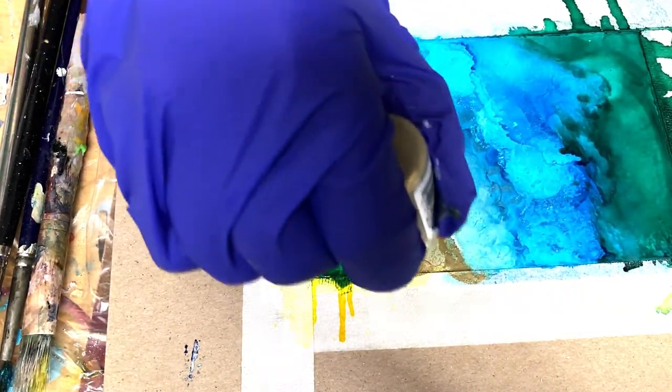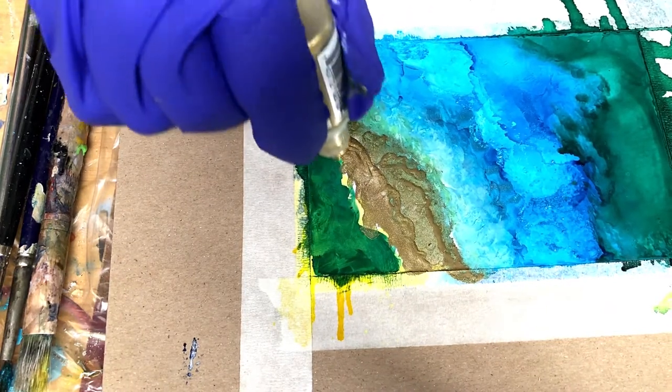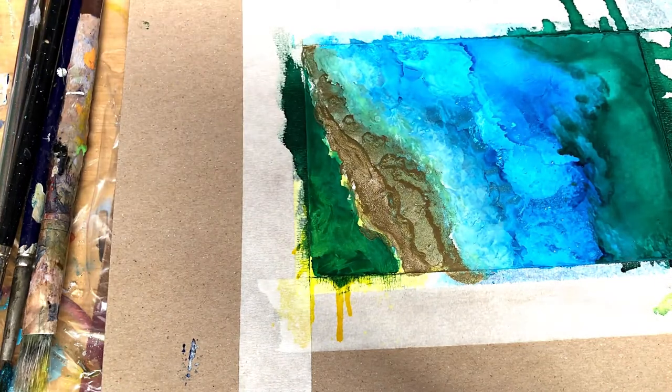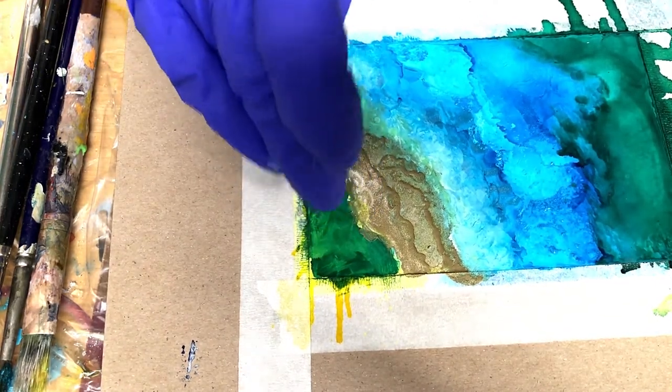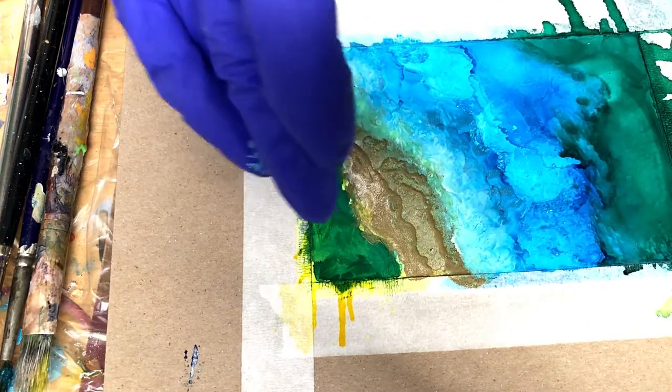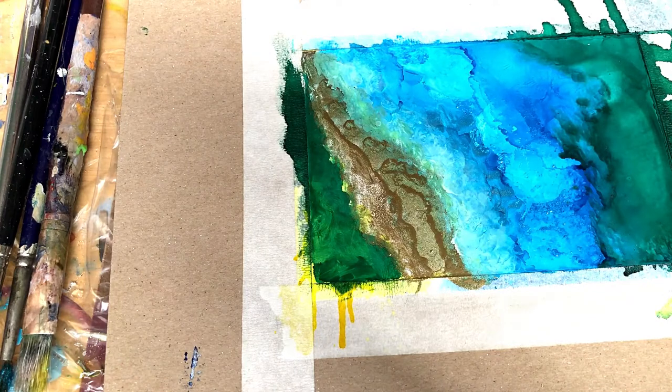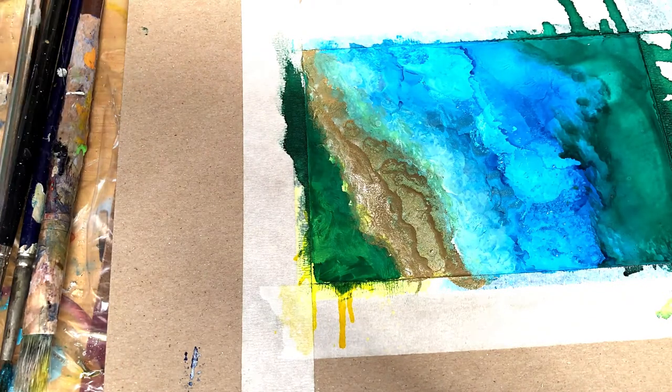I will put up a video pretty soon on the alcohol inks on ceramics again. And this time I will put a kind of like a primer, acrylic primer down, like just acrylic color paint, so you'll see that should help that it moves around better.